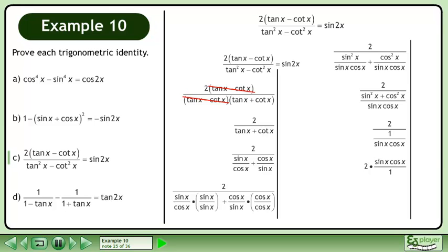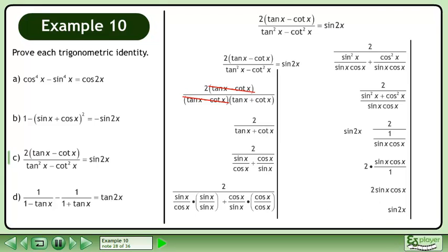Multiply the numerator by the reciprocal of the denominator. This becomes 2 sin x cos x. This is the same as sin 2x. The left side equals the right side, completing the proof.